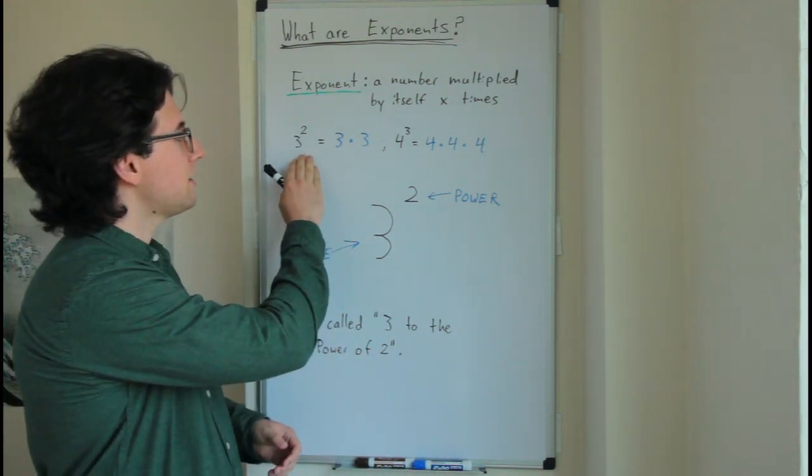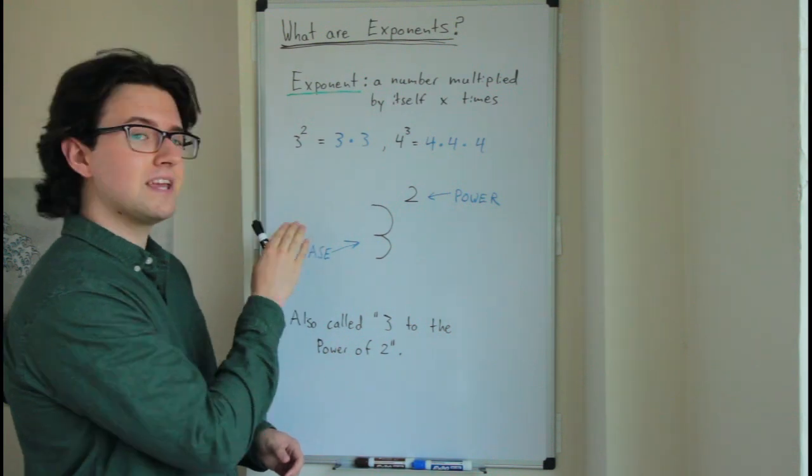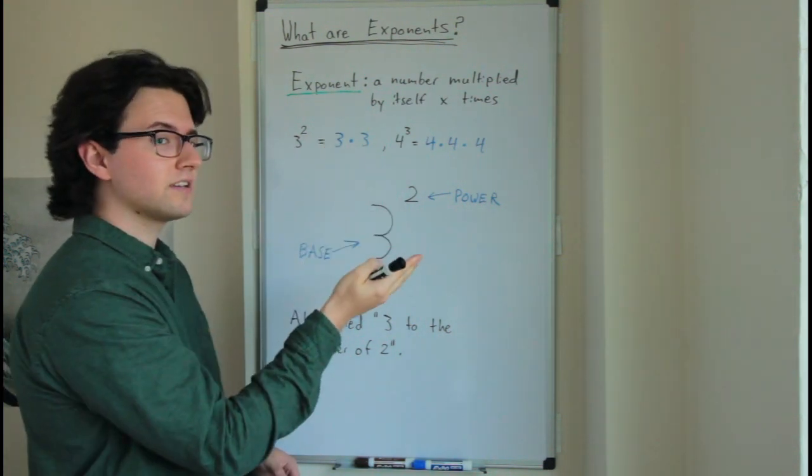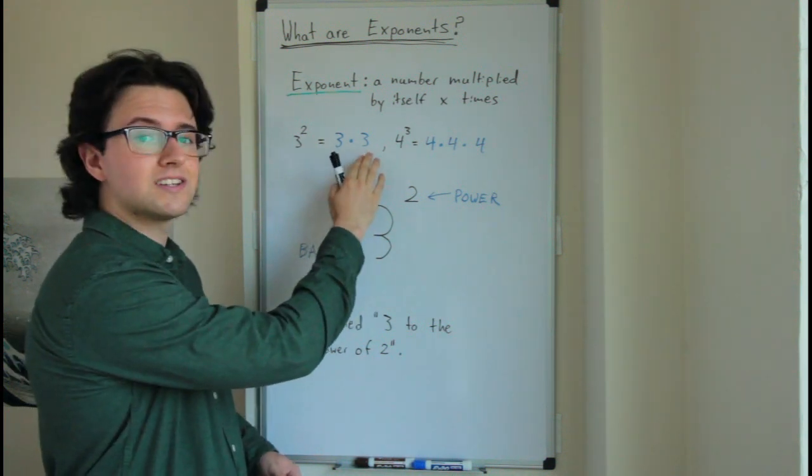So let's look at this. We have 3 to the power of 2. What that means is we're multiplying 3 by itself twice. So we end up with 3 times 3.